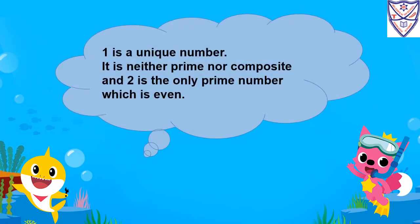1 is a unique number. It is neither prime nor composite. 2 is the only even prime number. In prime numbers, we write 2, which is the only even prime number.